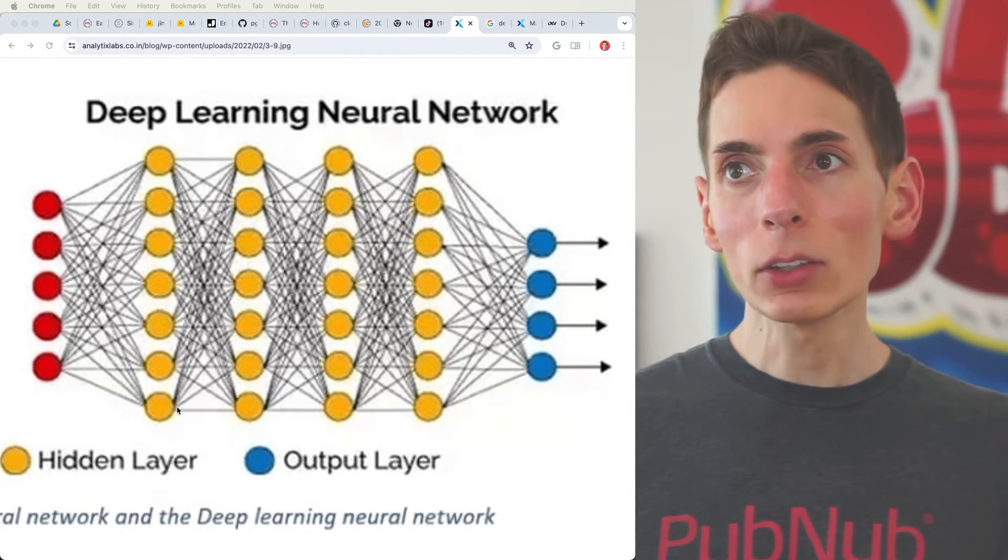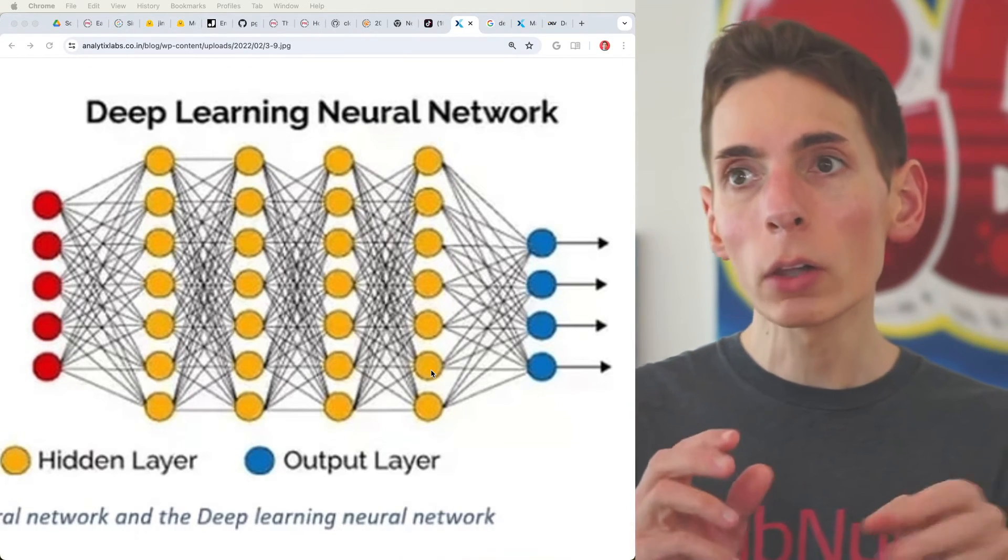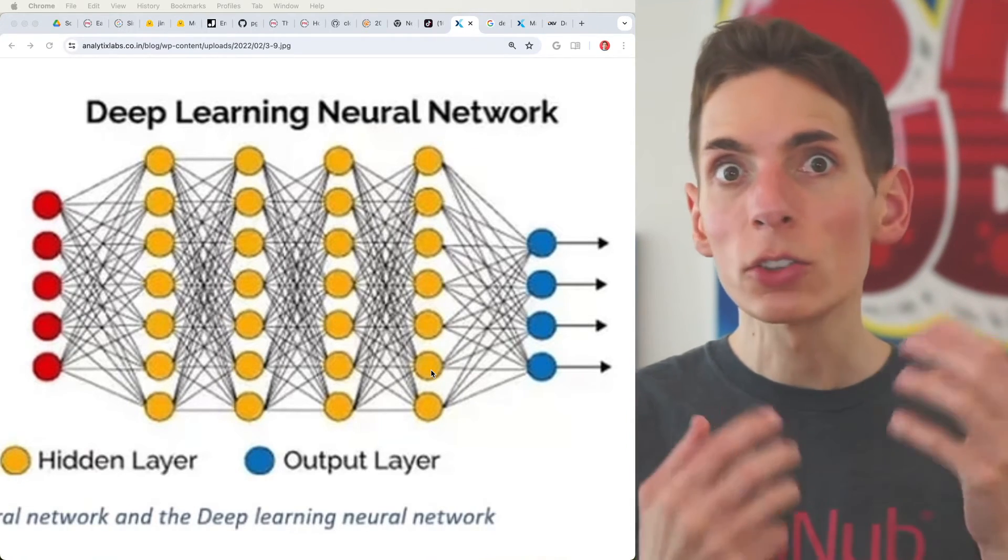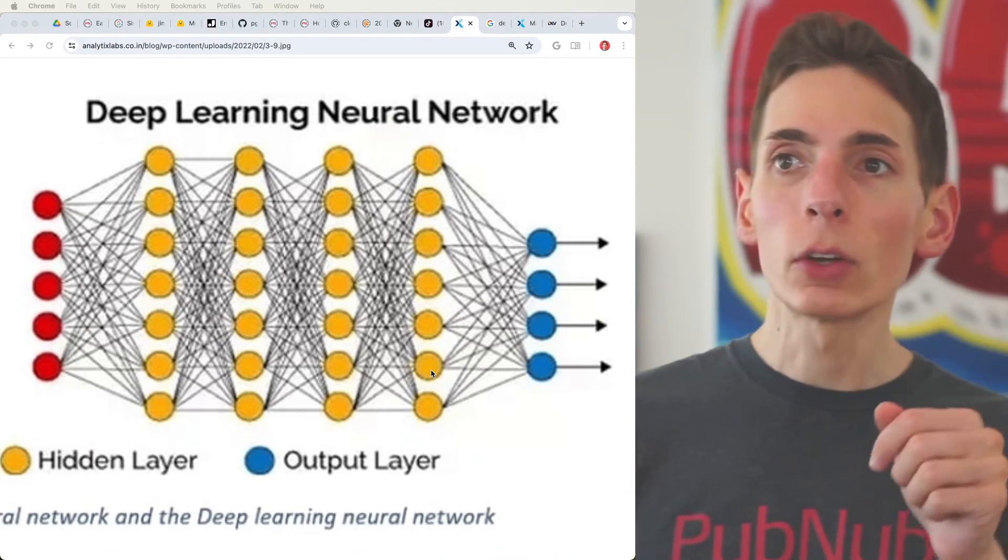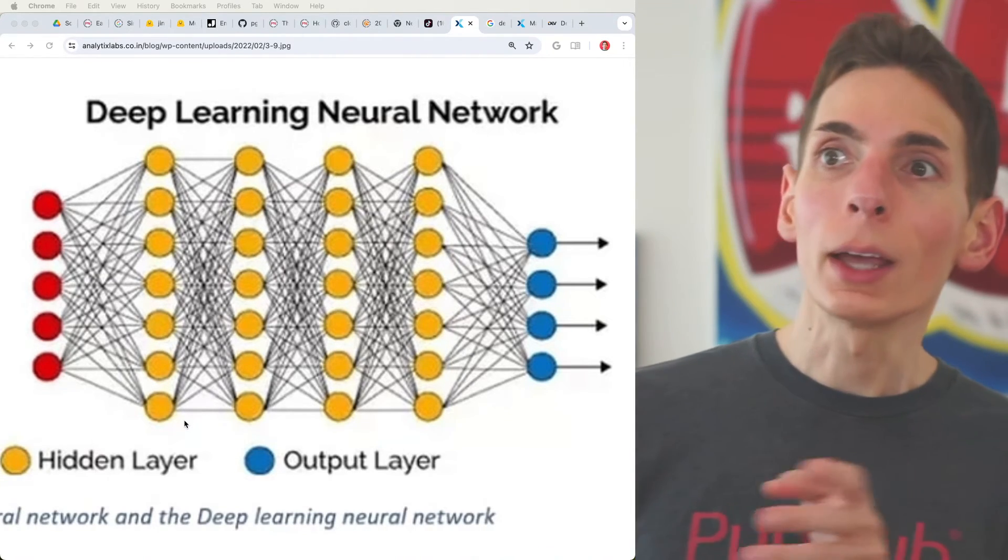And each of these internal matrices can be different sizes. They can be bigger, they can be smaller. You can put more units in them, the coefficients, the weights, the parameters. You can increase those, so you've got more floating point numbers in here, so it can remember more and have more connections.